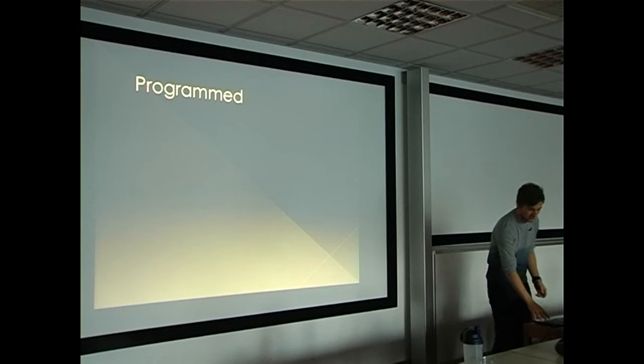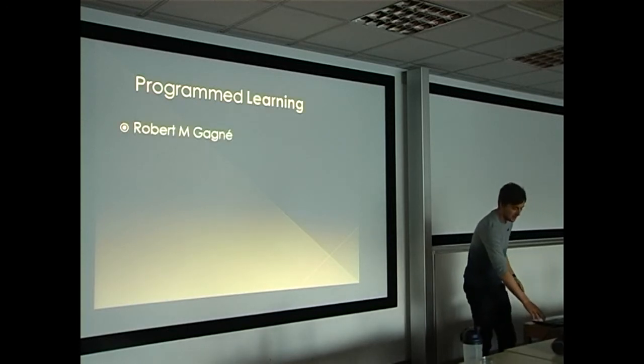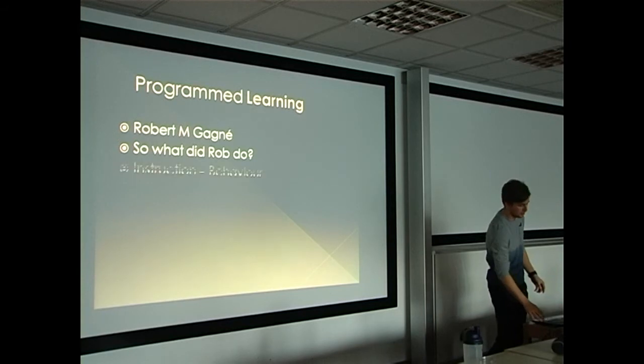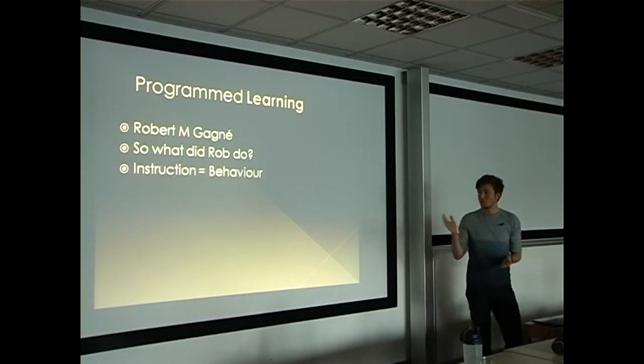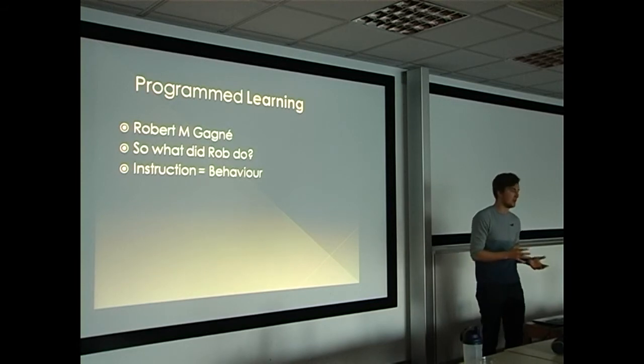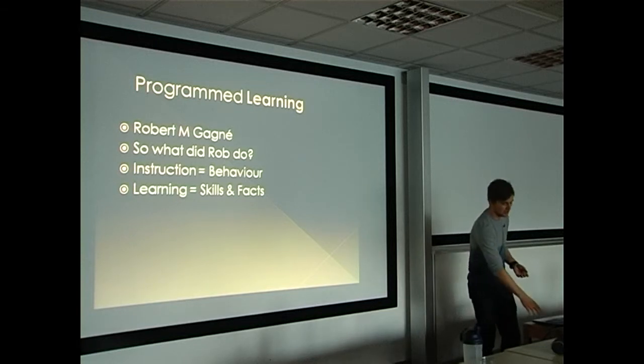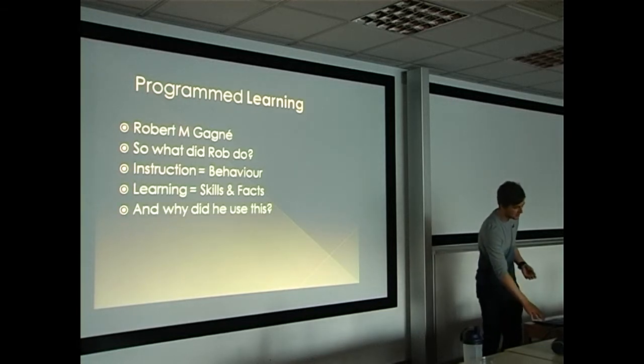From instruction soon came programmed learning. This was a theory which soon changed into an application into learning. So what did Robert Gagné do? He defined that instruction was to do with behavior attributes and trying to modify people's behavior, whereas learning is teaching people new skills and teaching facts.